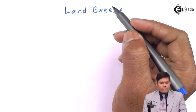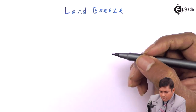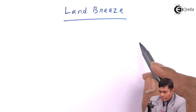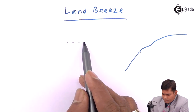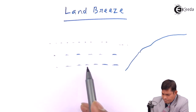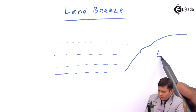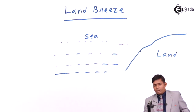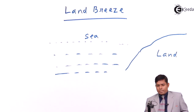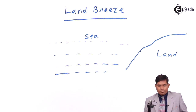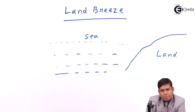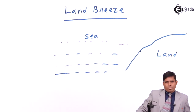First, land breeze — then we will discuss sea breeze. There is land on one side and sea on the other. Two substances are involved: water in the sea and soil on the land. These two substances have different specific heats, meaning they change and lose their temperature by different amounts of heat.